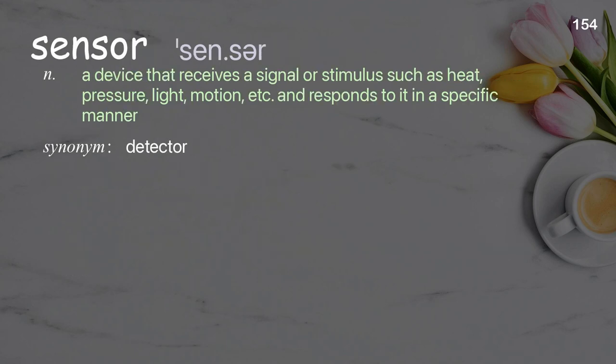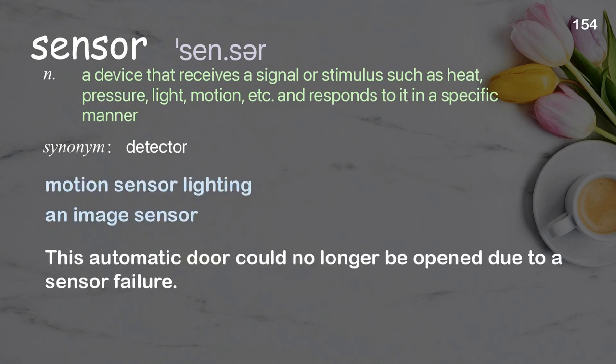Sensor: a device that receives a signal or stimulus such as heat, pressure, light, motion, etc. and responds to it in a specific manner. Examples: motion sensor lighting, an image sensor. This automatic door could no longer be opened due to a sensor failure.